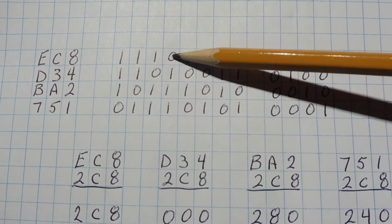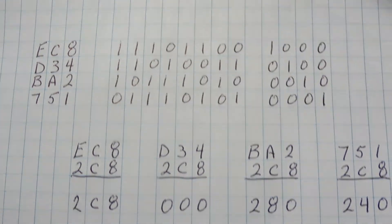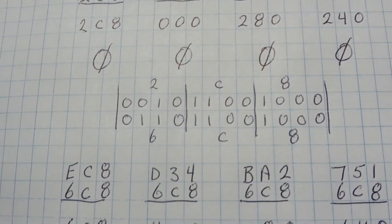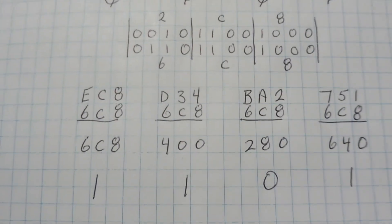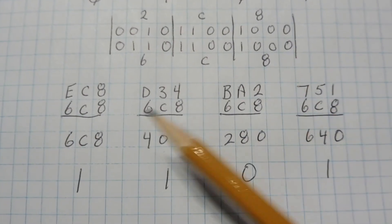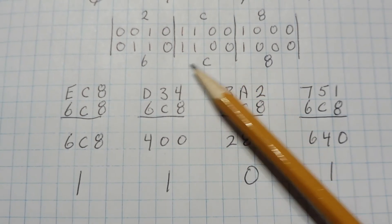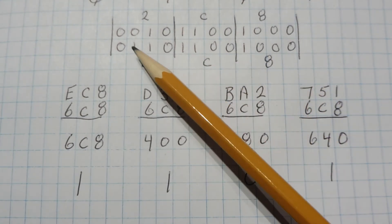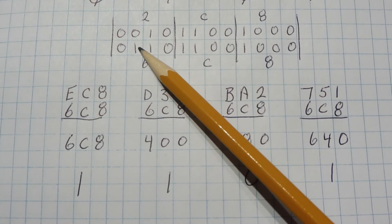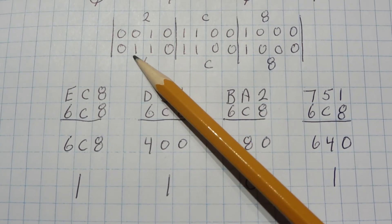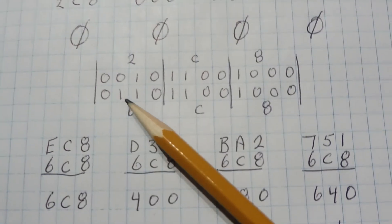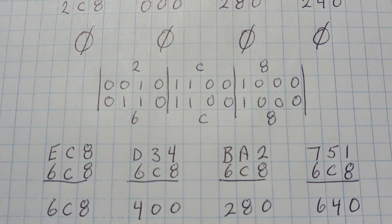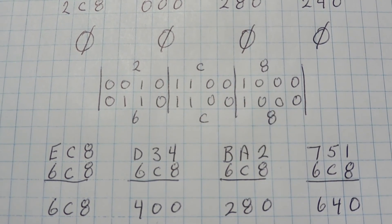So we go down to our error code that we got. Now we look at the code 6c8 and we go over to bit 6. So we know that this 1 here should be changed to a 0. And if we change it to a 0, then we'll get the correct value of 2c8. And we can pull out the data 2c.